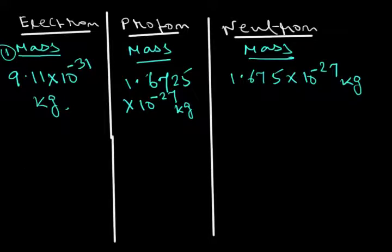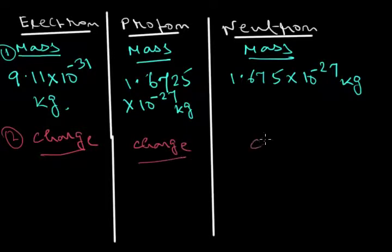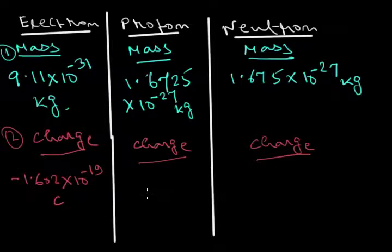Now charge. Charge of electron, proton, and neutron. Charge of electron is -1.602×10^-19 coulombs. Charge of proton is +1.602×10^-19 coulombs. And charge of neutron is zero.